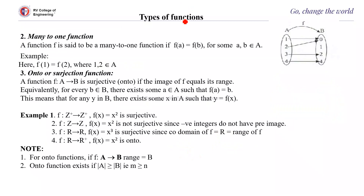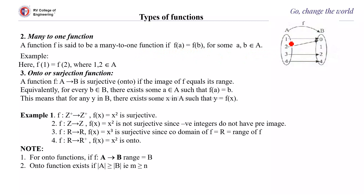The next kind of function is many-to-one function. Here, more than one element has the same image. That is, if f(a) = f(b) for some a, b in A — for example f(1) = f(2) — then the function is many-to-one.